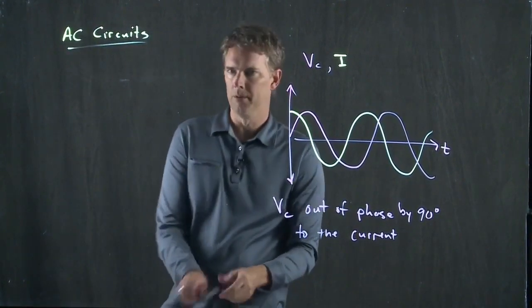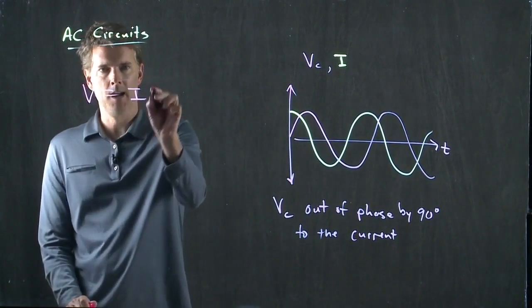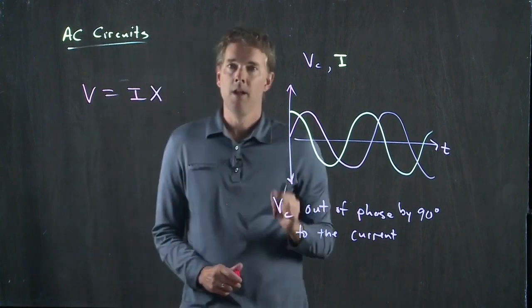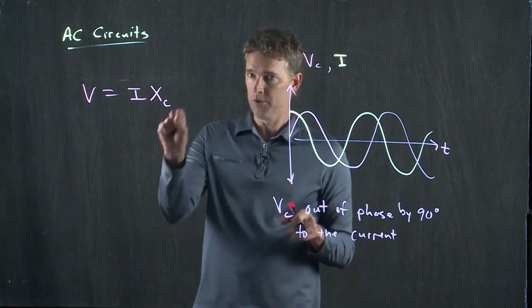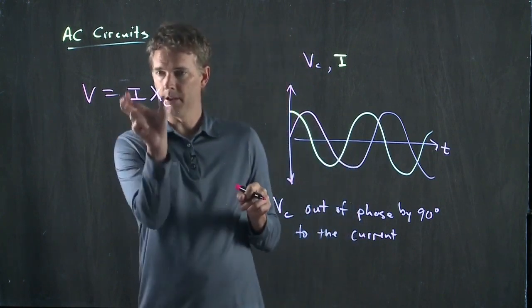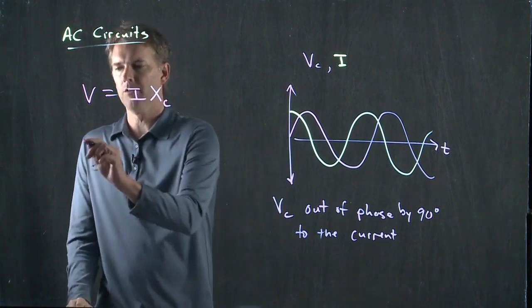So let's think about what that reactance looks like for a capacitor compared to what we had before for the inductor. Our equation looks very similar. We have V equals I times the reactance, but now it is X sub C. It's the voltage drop across the capacitor is I times the reactance. But what is the reactance?